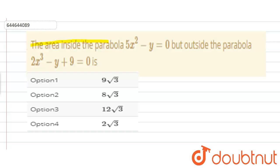The question is: find the area inside the parabola 5x² - y = 0 but outside the parabola 2x² - y + 9 = 0. We have given 5x² - y = 0 and 2x² - y + 9 = 0.